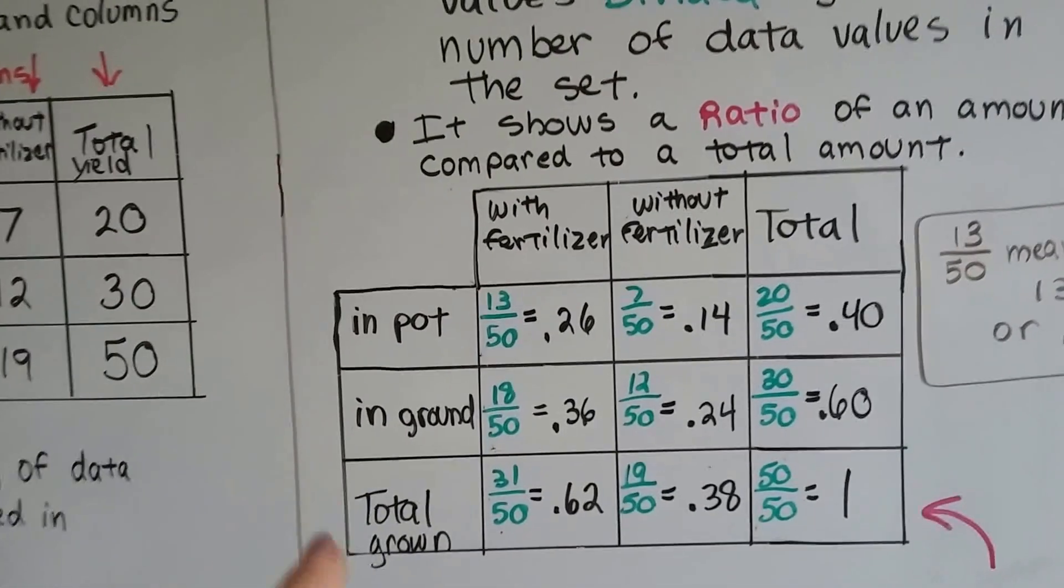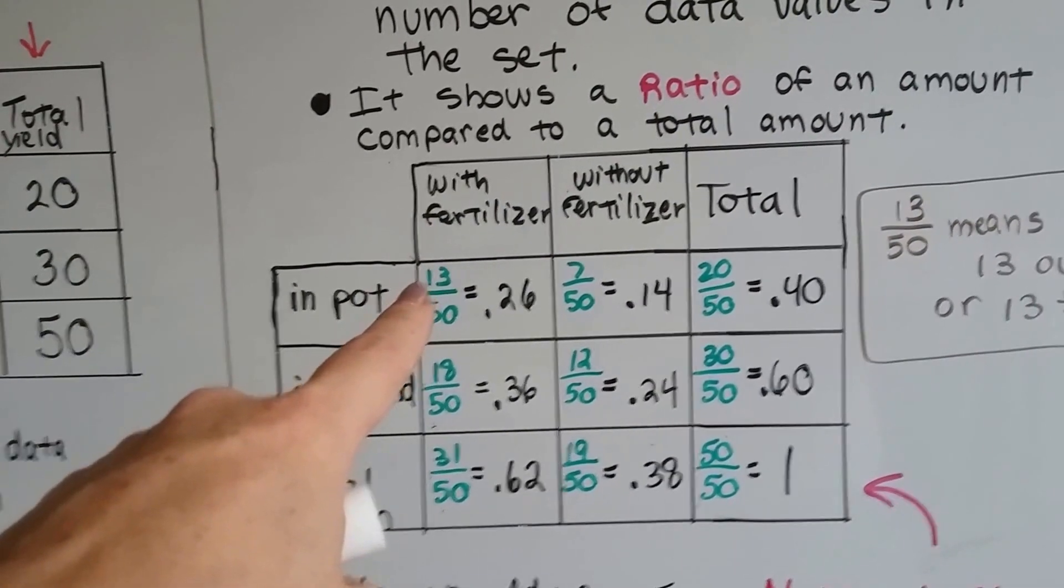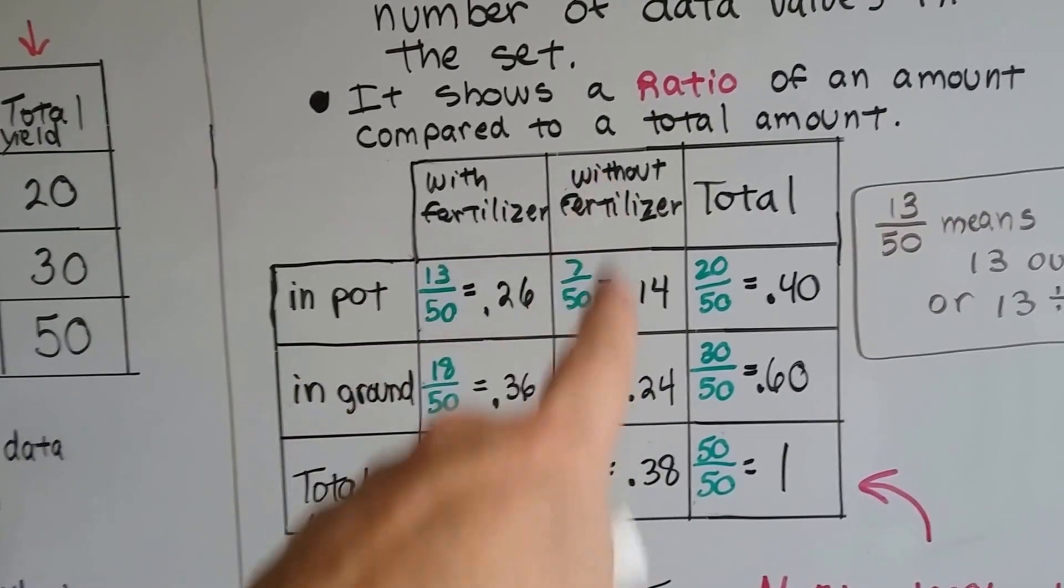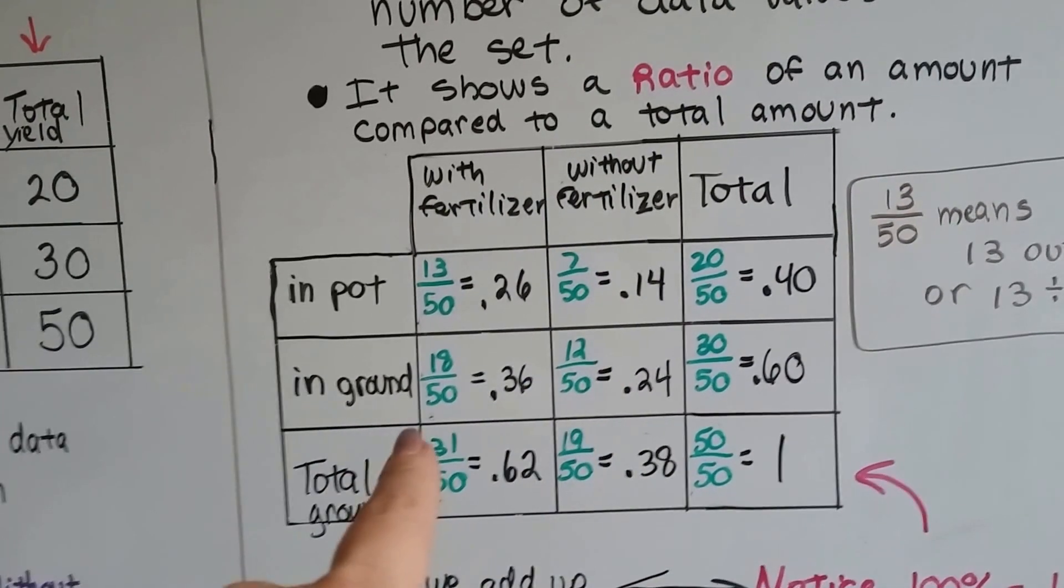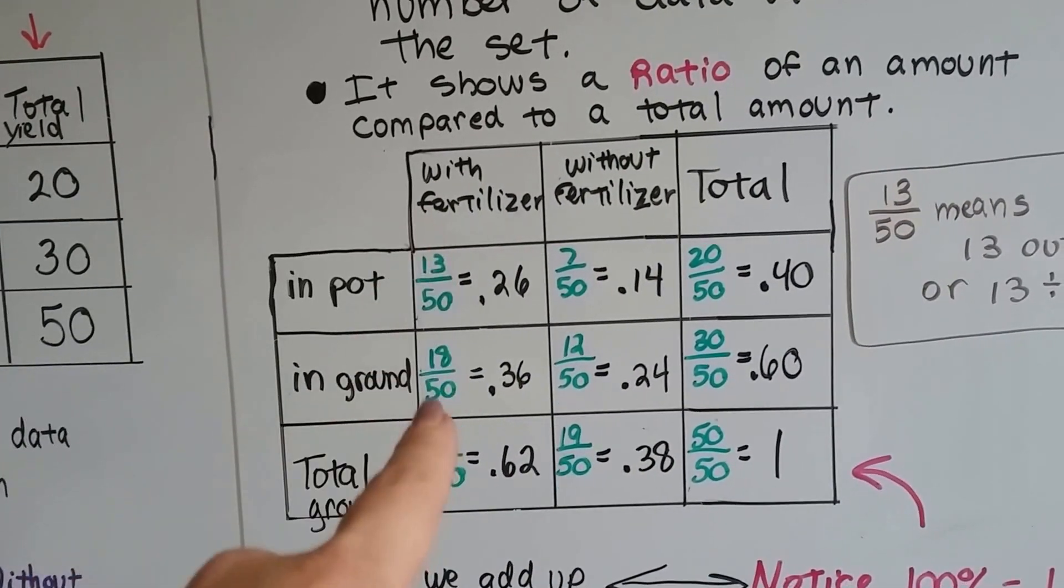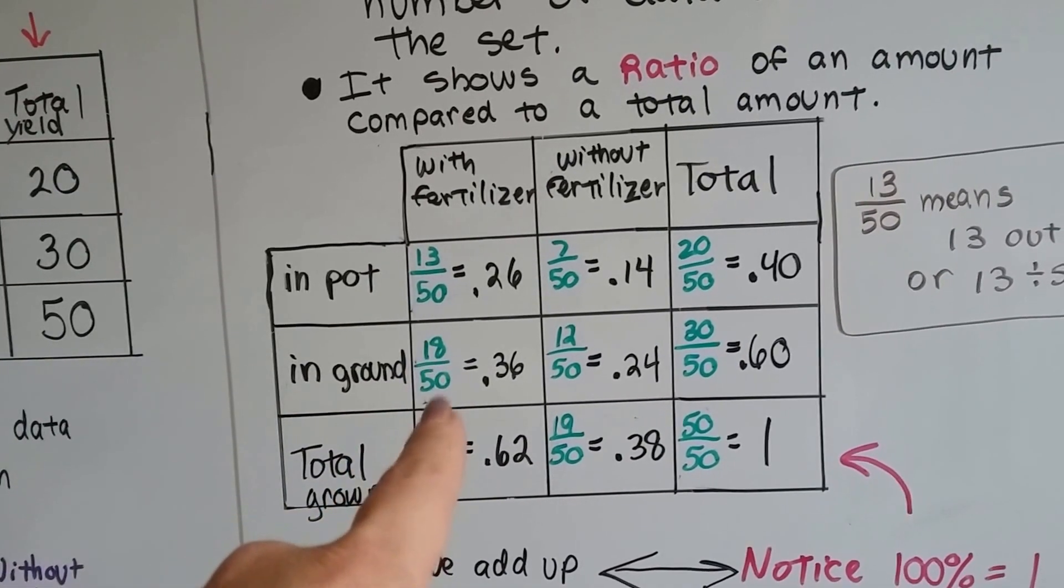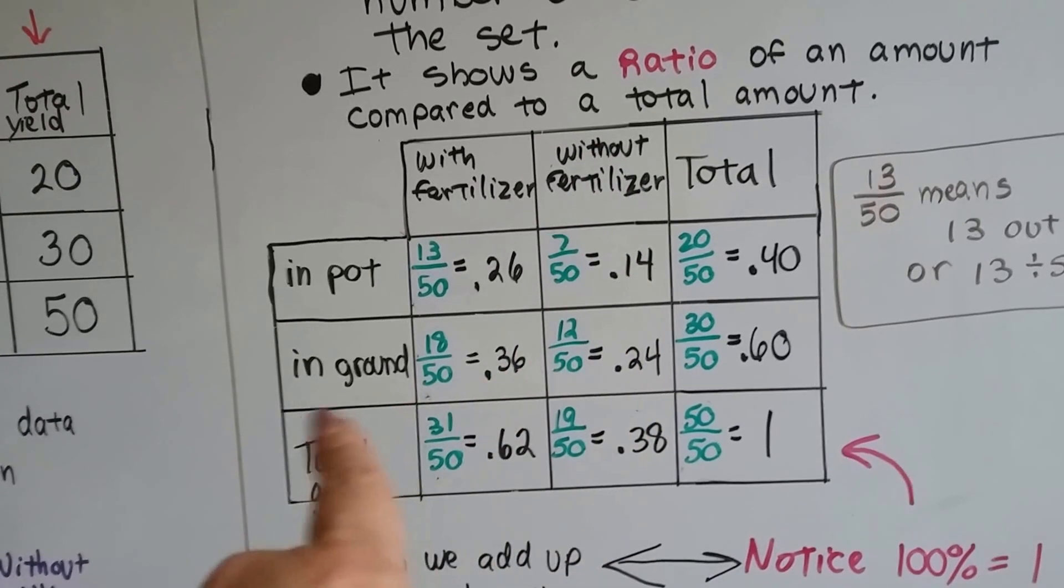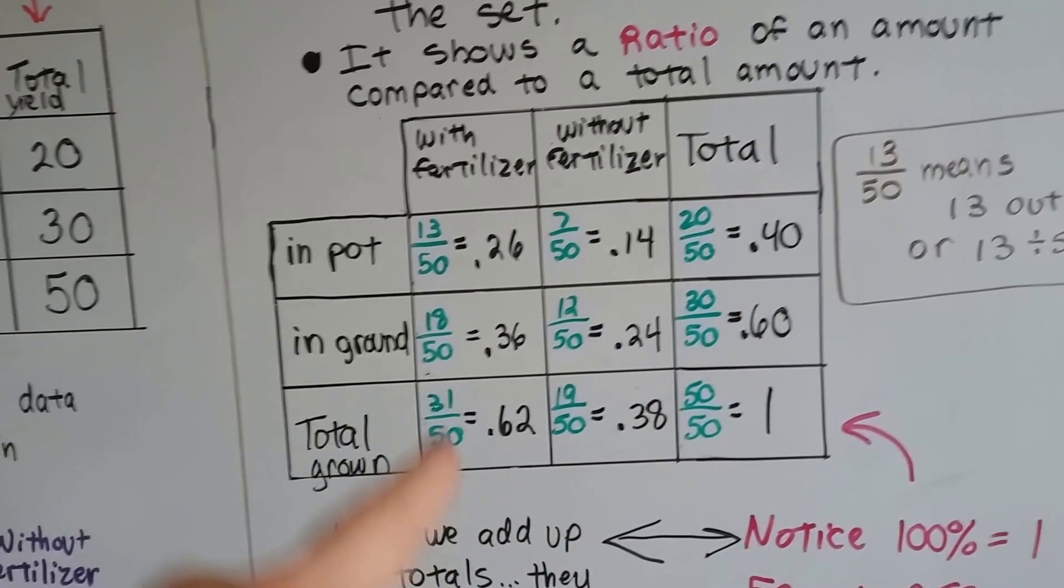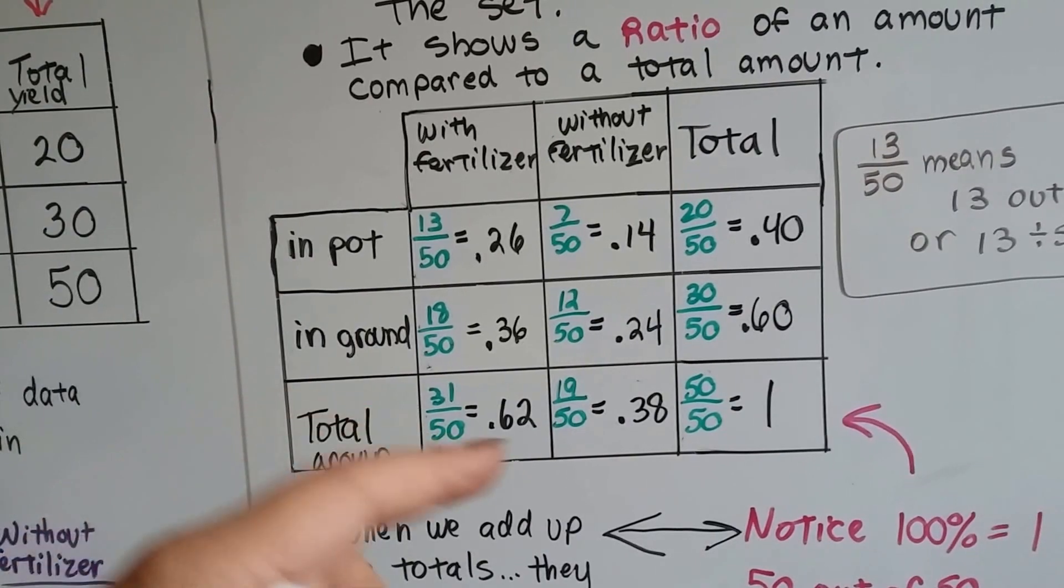So, in a pot with fertilizer, there were 13 plants. In a pot without fertilizer, there were 7. And in the ground with fertilizer was 18 out of 50. With fertilizer in the ground, I mean, without fertilizer in the ground was 12 out of 50. We totaled the 13 and 18 and get 31 out of 50. That's our 0.62.